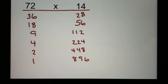So, my odd numbers. 36 is even. 18 is even. 9 is odd. 4 is even. 2 is even. 1 is odd.